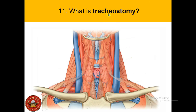Tracheostomy — 'tracheo' comes from trachea and 'stomy' means artificial opening. A tracheostomy is a procedure in which we create an artificial opening in the trachea for the airway. This procedure is performed when the upper airway is blocked.